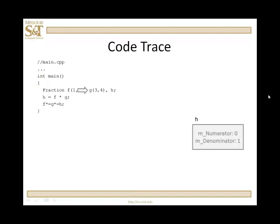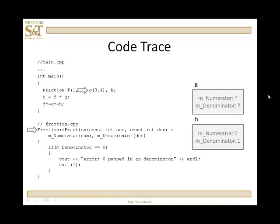Now we start to construct g. It calls the appropriate constructor, and remember that the compiler will call the constructors automatically. It calls the constructor that will accept two arguments. We set the numerator to three, the denominator to four, check to make sure the denominator is not zero, and g is constructed.